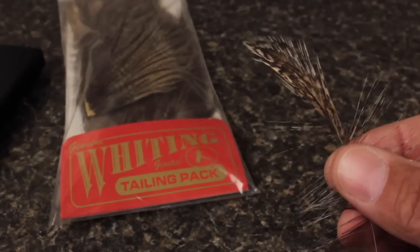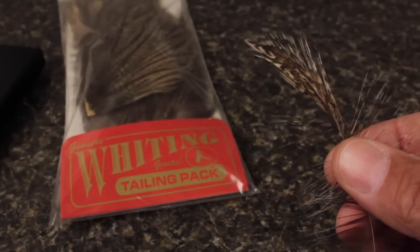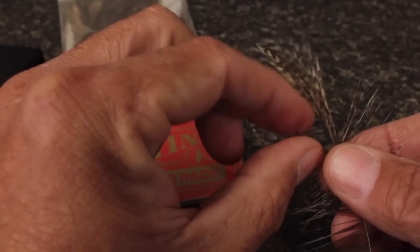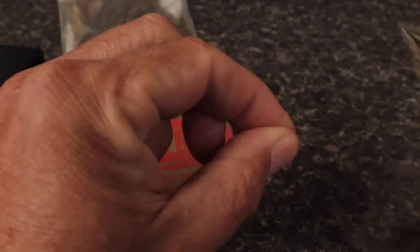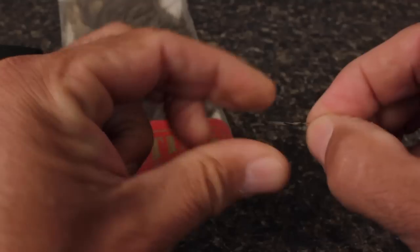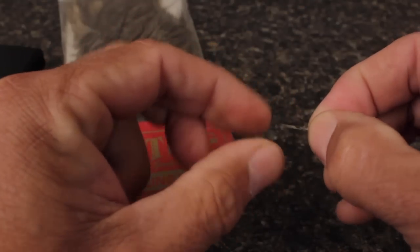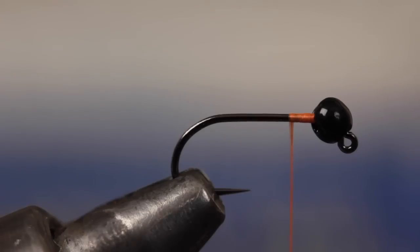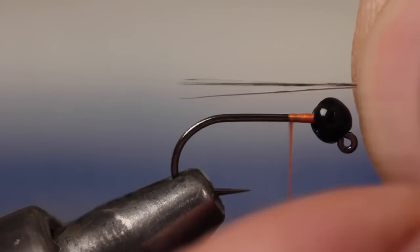For the tail, Medium Pardo Coque de Leon is hard to beat in terms of its markings and fine stiff fibers. A half dozen or so is all you need. After you strip them from the stem, keep their tips aligned and measure to form a tail about a hook shank in length.